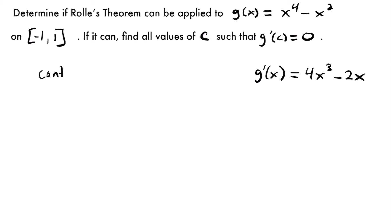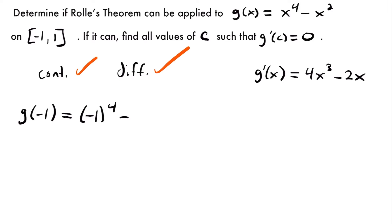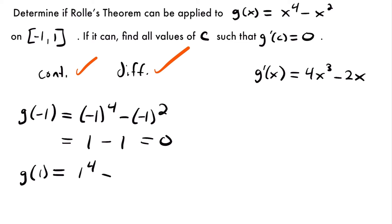Since that derivative is also a polynomial, it's continuous on this interval with no undefined values. So we've confirmed continuity and differentiability. Now we check the endpoints: g(-1) = (-1)⁴ - (-1)² = 1 - 1 = 0, and g(1) = 1⁴ - 1² = 1 - 1 = 0. Both endpoints have the same y-value, so Rolle's theorem applies.